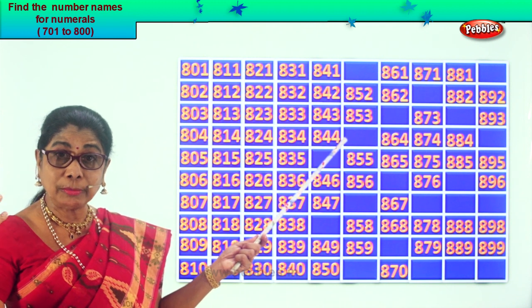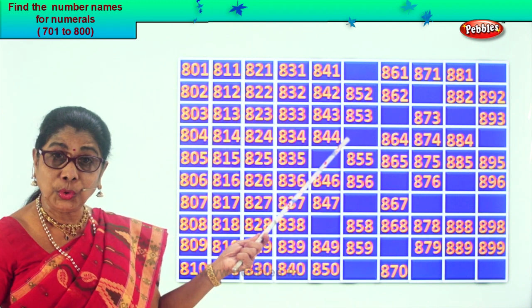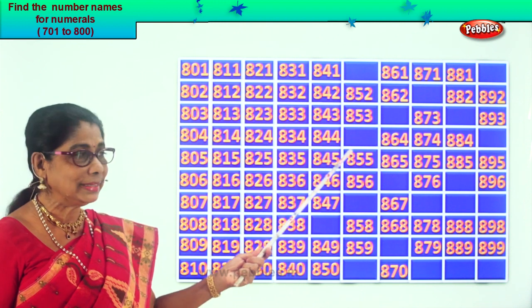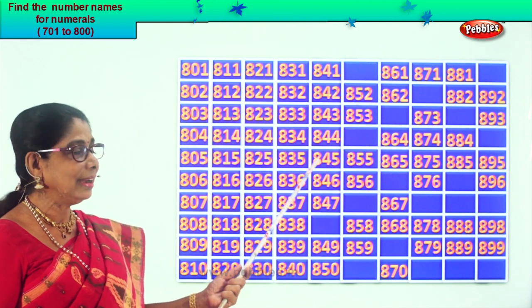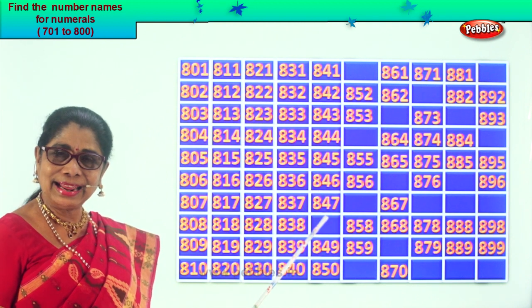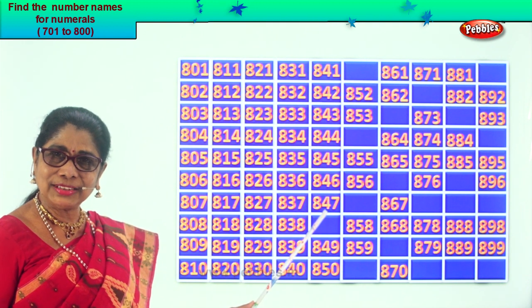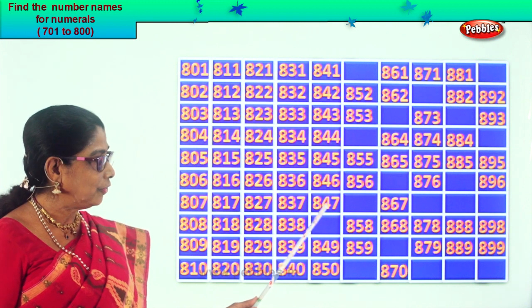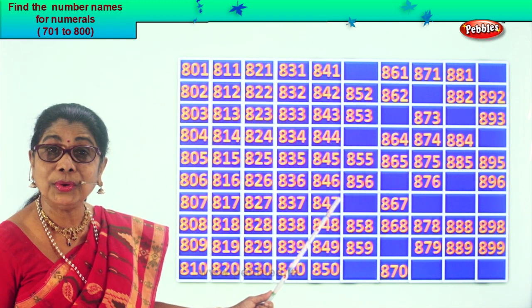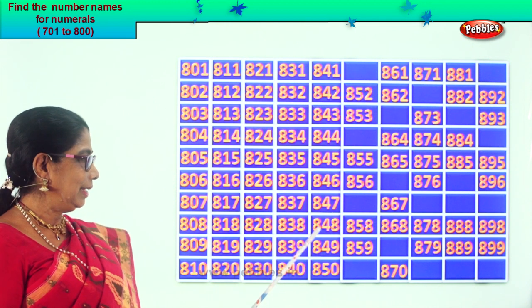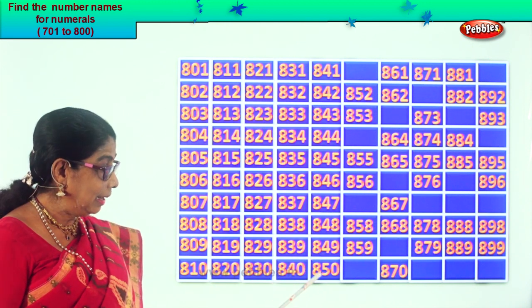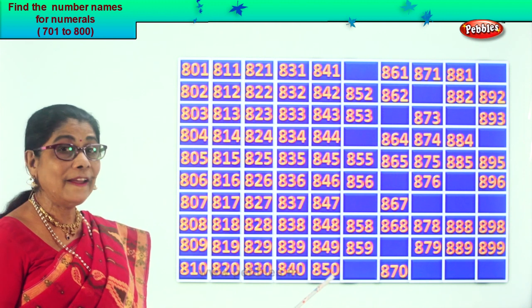After 4 comes 5 — after 44 comes 45. So the missing number is 845, then 846, 847. After 7 comes 8 — after 47 comes 48. So 848, 849, 850. Very good.